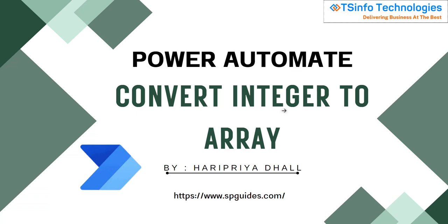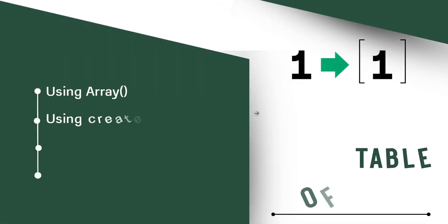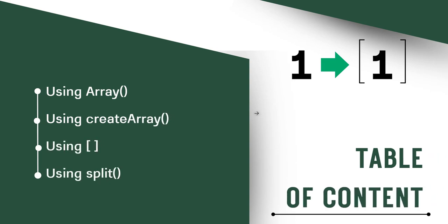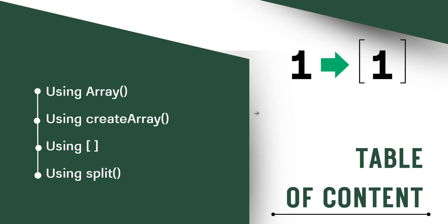Welcome to the YouTube channel. In this Power Automate tutorial, we will see how to convert integer to array in Power Automate. We will cover four methods: using the array method, the createArray method, using square brackets, and using the split method to convert a list of string numbers into an array. Now let's check out our first method.